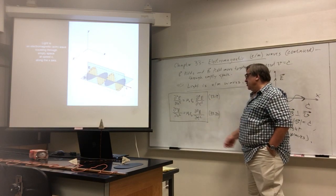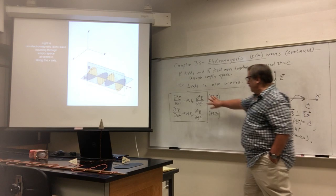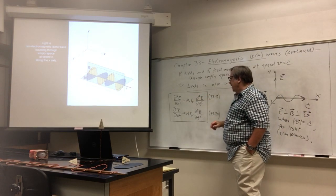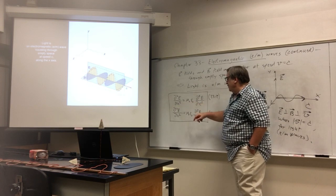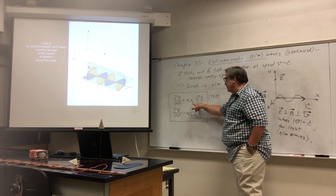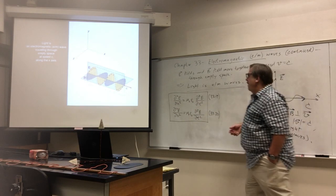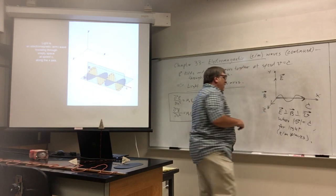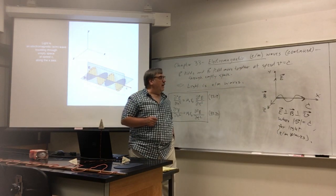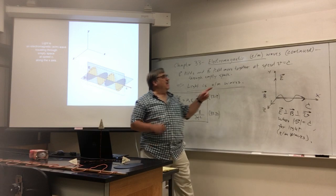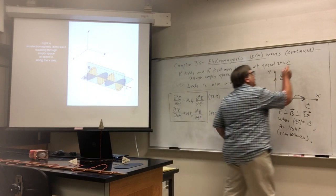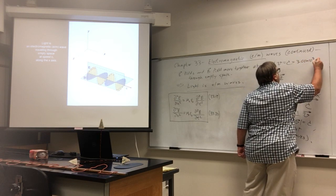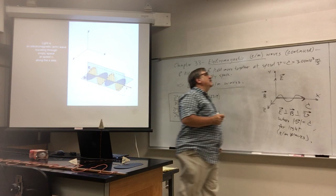These are wave equations Maxwell instantly recognized, where one over the speed squared is equal to mu zero times epsilon zero — the permeability of free space and the permittivity of free space, basically how strong magnetic fields and electric fields are. He plugged the numbers in, which were well known by Maxwell's time, and got the speed of light in empty space: 3.00 times 10 to the 8 meters per second, and that was well known by Maxwell's time.